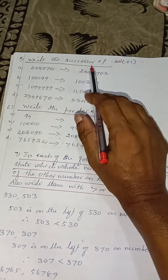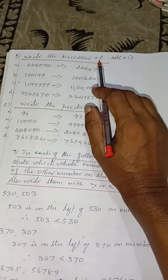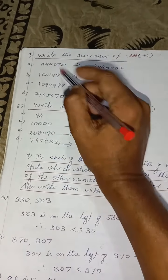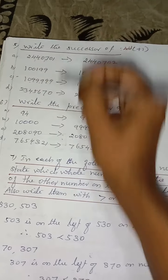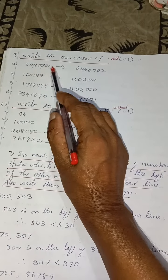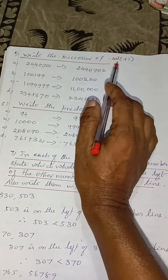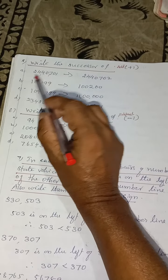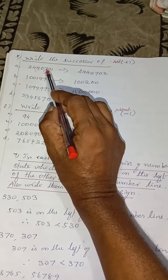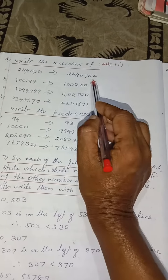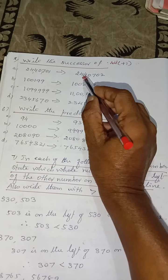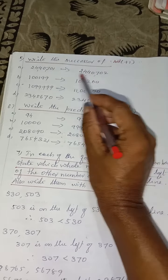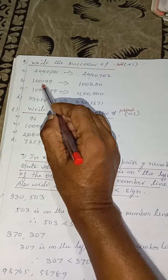And next one is write the successor of. Successor means what I told you, add 1. So here just let us put the commas. So 24,40,701. What is the successor? Add 1 to this. If we add 1 to this, what is the answer? Instead of 701, you will be getting 702. So our answer is 24,40,702.